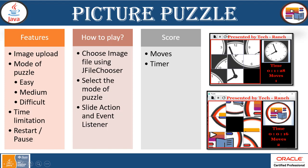There is also a restart and pause feature. For how to play: you first choose an image file — JPEG, GIF, BMP, or PNG — using the JFileChooser. You then select the mode of the puzzle: easy, medium, or difficult. A slide action and event listener performs the tile sliding. The score is tracked using a timer and the number of moves the player makes.